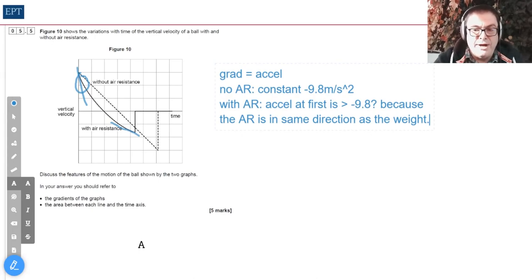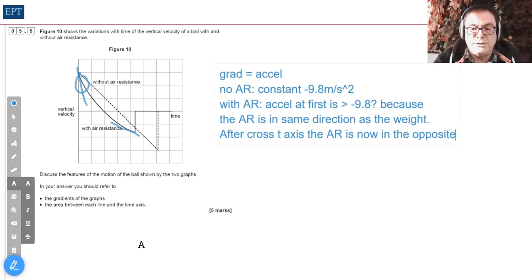After it crosses over the axis, the ball has changed direction and is now coming down, so the air resistance is now in the opposite direction to g or weight, and so the acceleration is reduced.